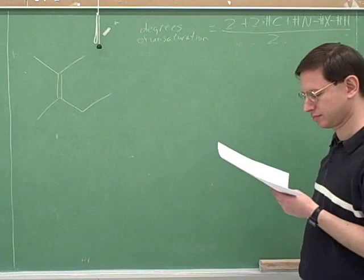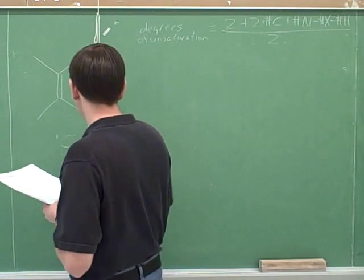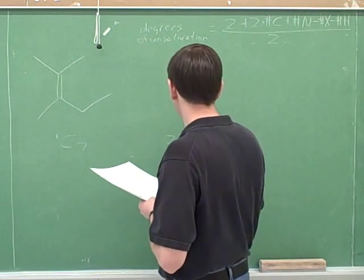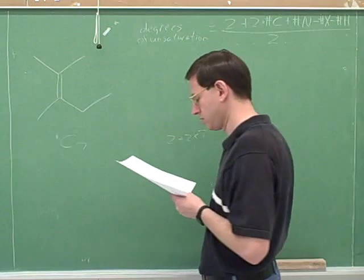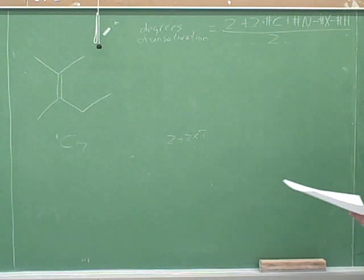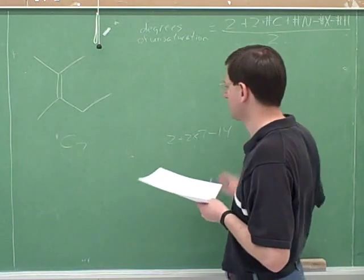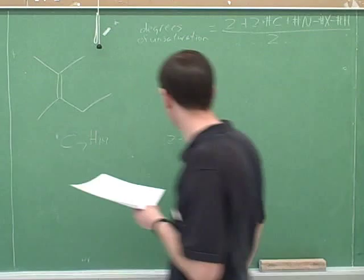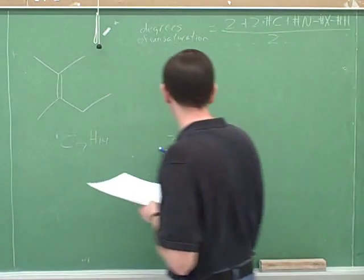So we have, okay, so we're going to do 2 plus 2 times 1, 2, 3, 4, 5, 6, 7. Minus, I'm going to be plus 0, minus 0. So minus 3, 4, 5, 6, 7, 8, 9, 10, 11, 12, 13, 14. So 16 minus 14, divided by 2, equals 1.